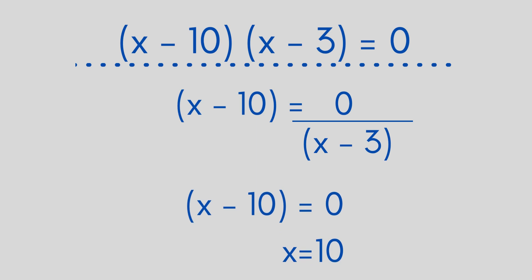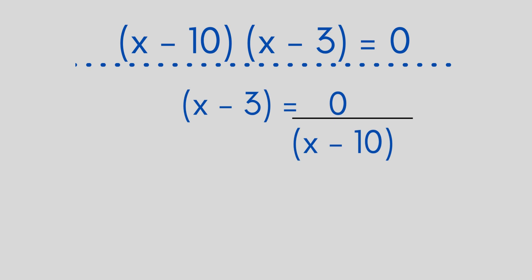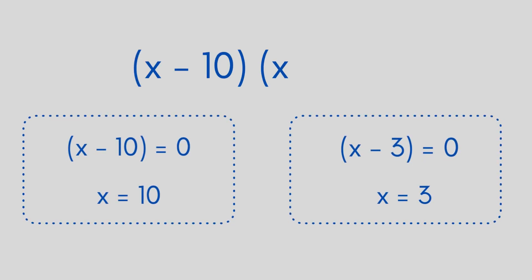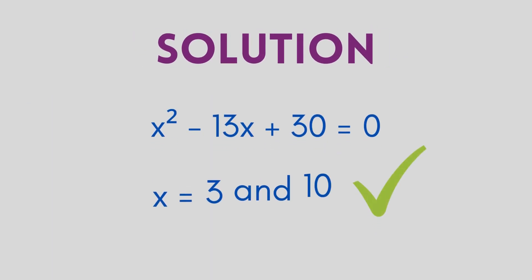Similarly, when (x - 10) is taken to the right hand side, we will be left with only x - 3 = 0 and when this minus 3 is taken to the right hand side, we will be left with x = 3. So we get two roots or solutions for this quadratic equation that are x = 3 and 10.